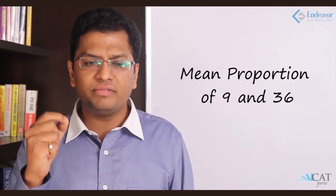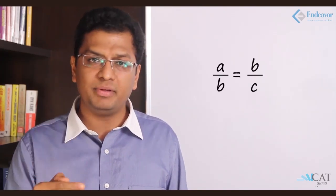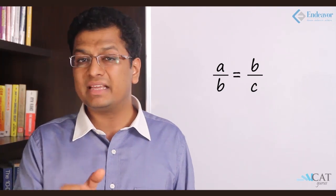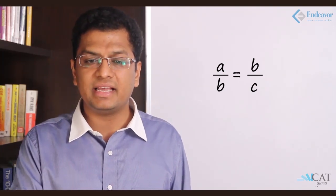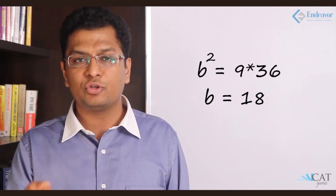Let's look at another question: mean proportion of 9 and 36. What is the mean proportion? Going back to the previous one, A is to B is to C are supposed to be in a proportion. What is mean proportion is when A is to B equal to B is to C. B becomes common here which is nothing but A upon B equal to B upon C. We're given A and C. A is 9 and C is 36, so B square is nothing but 9 into 36, so B becomes 18.